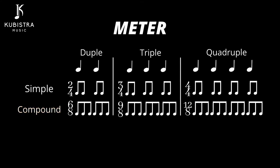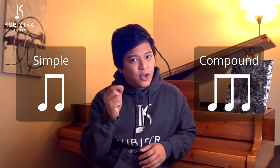To decide whether a meter is duple, triple, or quadruple, it depends on how many beats the music has in each measure. But to decide whether a meter is simple or compound, it's a matter of how those beats are subdivided. If you want this classification table as a poster, you can find it in the link below — it's free. This concept of simple or compound meter is actually rather important because it's almost like the DNA of the song.